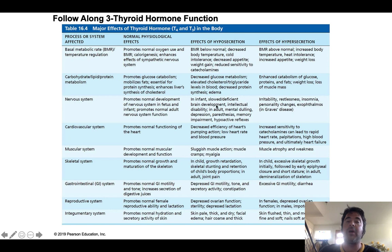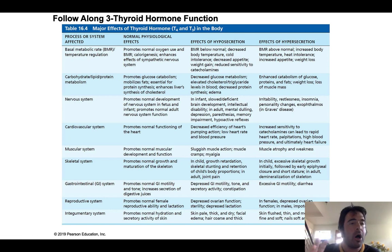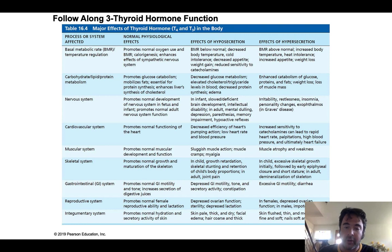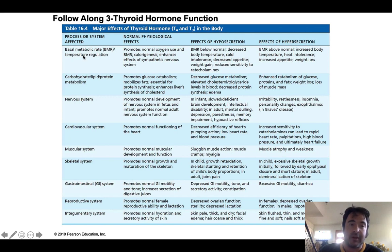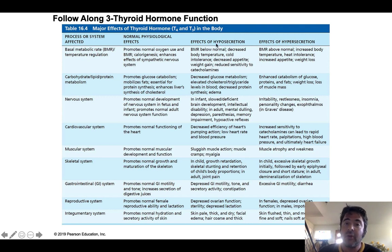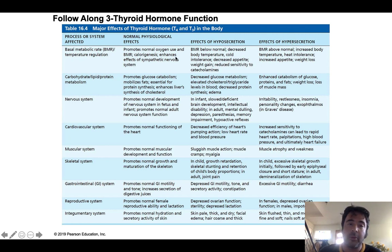When we think about thyroid hormone, it has target cells all over the body. There are a few things to highlight here from the table: process or system affected, normal physiological effects, effects of hyposecretion — where you're not producing enough — and effects of hypersecretion — where you're producing too much.